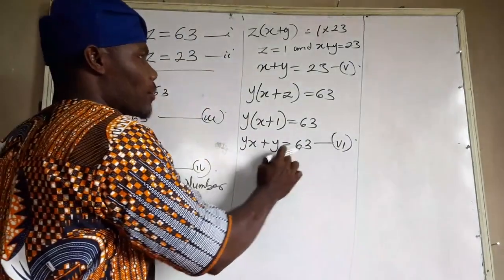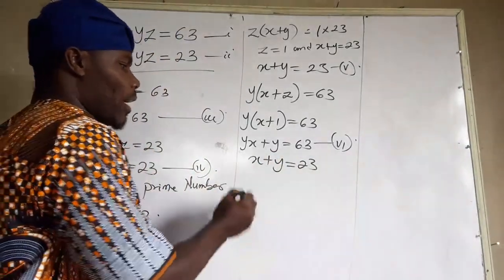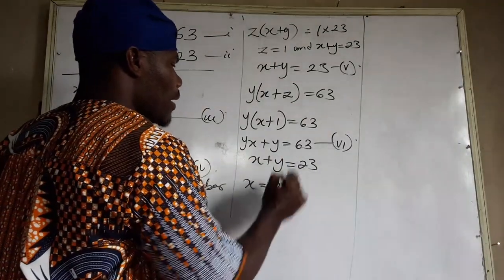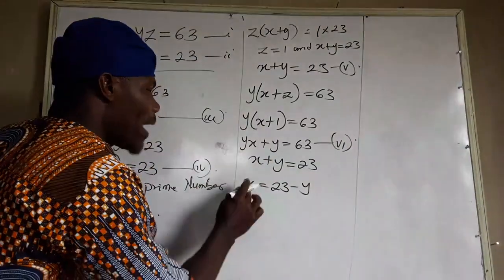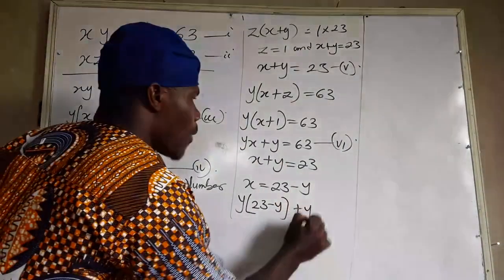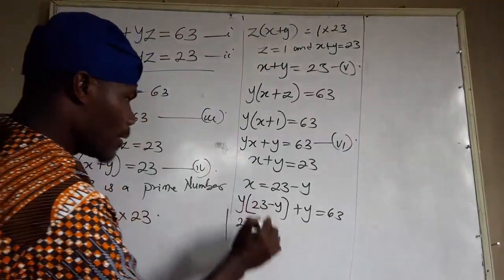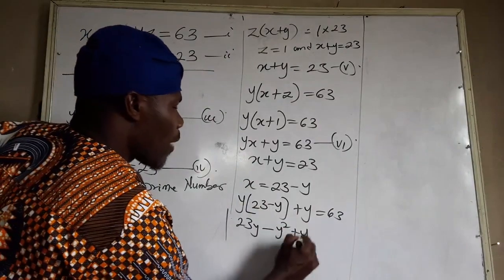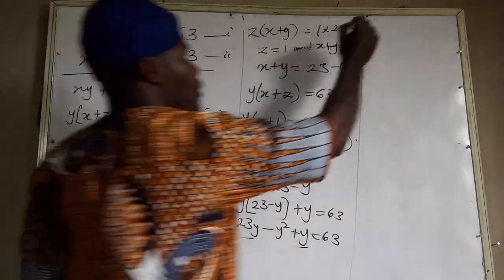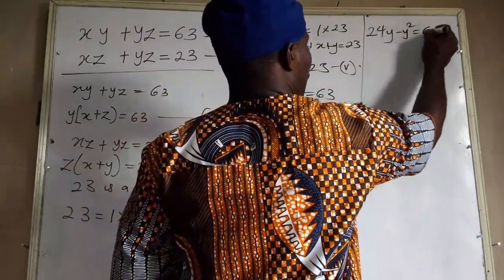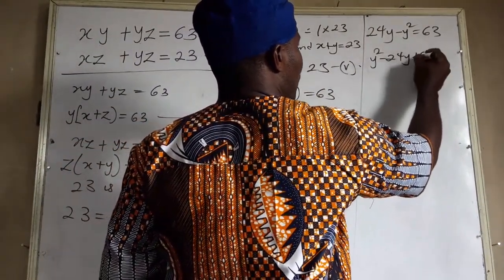So we now have x plus y equals 23, which we call equation five, and y(x plus 1) equals 63, which we call equation six. Making x the subject from equation five: x equals 23 minus y. Substituting into equation six: y(23 minus y plus 1) equals 63, giving us 23y minus y squared plus y equals 63, which simplifies to 24y minus y squared equals 63.